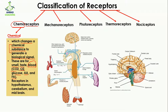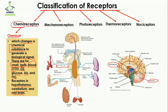Smell and taste are external changes, while blood-based chemicals are internal changes. The receptors in the hypothalamus, cerebellum, and midbrain are related to chemoreceptors. Here you can see the hypothalamus — these are the sites where central chemoreceptors are present. The brain detects changes in carbon dioxide, oxygen, and hydrogen ions, and responds accordingly.